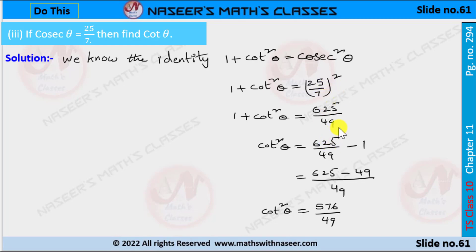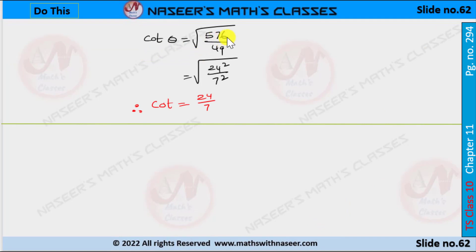We transpose 1 from LHS to RHS, so cot²θ equals 625 by 49 minus 1. Taking LCM as 49, the numerator becomes 625 minus 49, which gives 576. So cot²θ equals 576 by 49. Taking the square root, 576 is 24 square and 49 is 7 square, so cot θ equals 24 by 7.